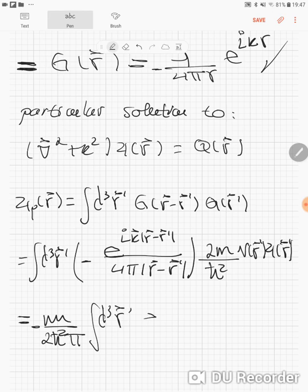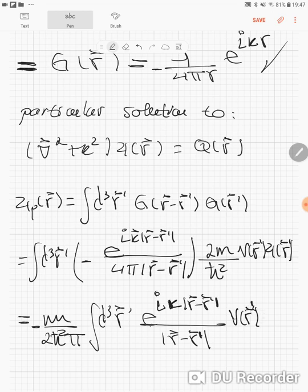The integral is d³r prime of e to the i kappa times R minus R prime divided by R minus R prime times V of R prime times Psi of R prime. This is the particular solution for the Schrödinger equation.